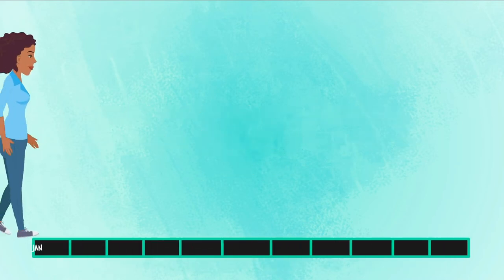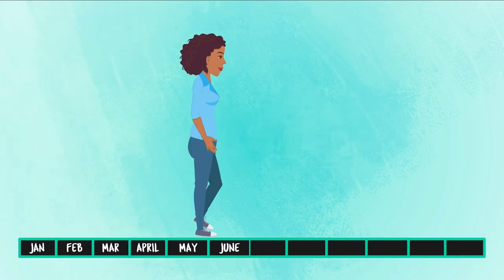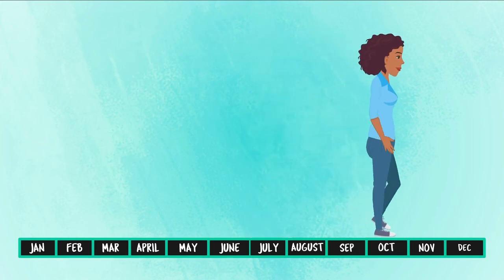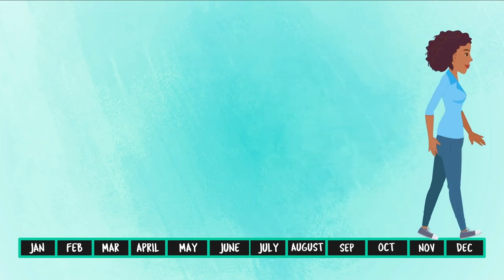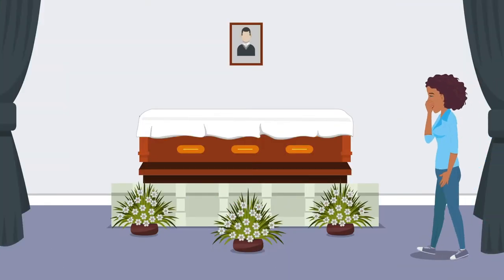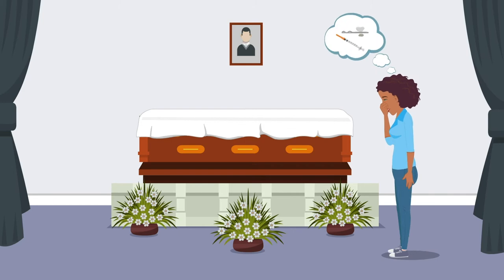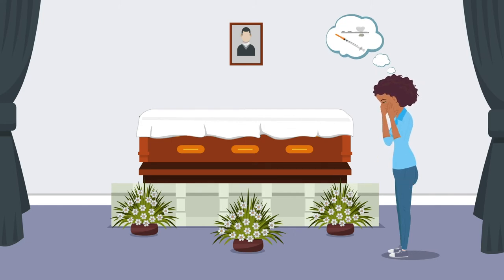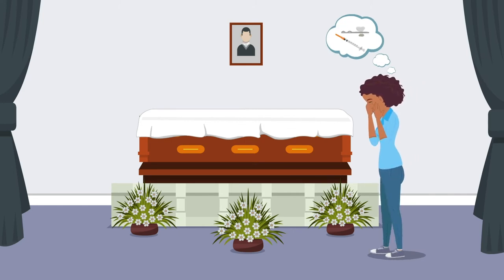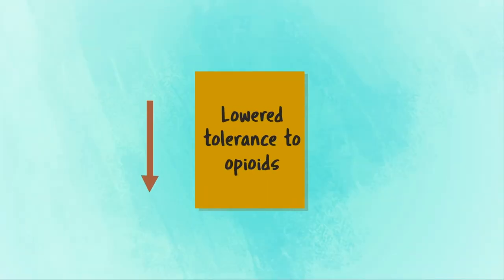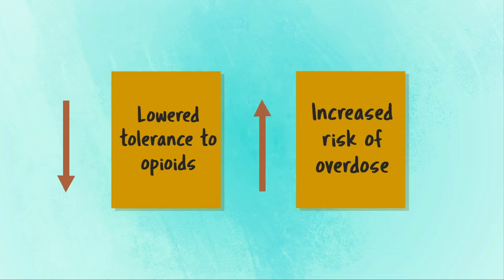Example 2: A person with an opioid use disorder has abstained from opioid use for a year. After the recent death of a friend, this individual experiences extreme stress and begins to experience cravings for opioids to help her cope. Having lowered tolerance to opioids after her prolonged period of abstinence, this person is at increased risk of overdose.